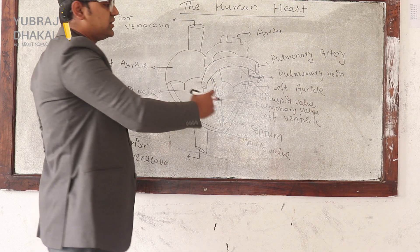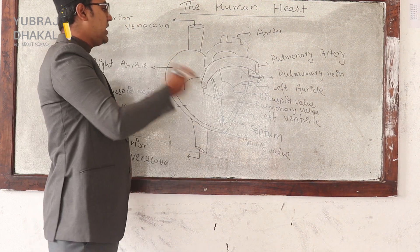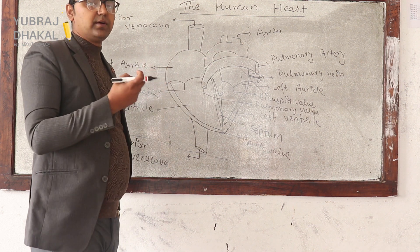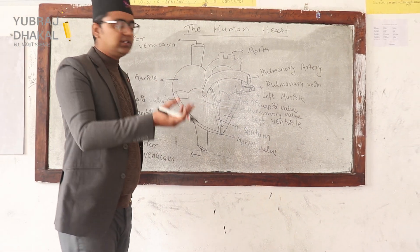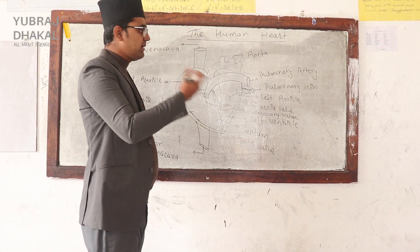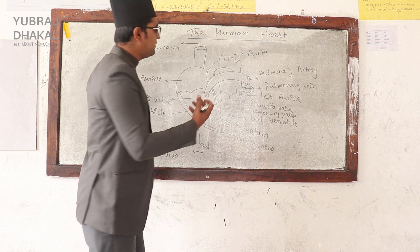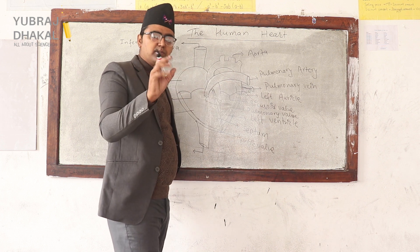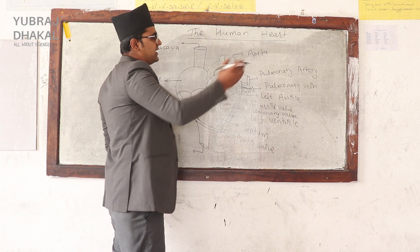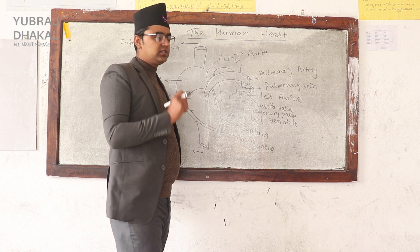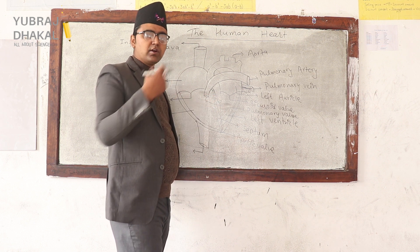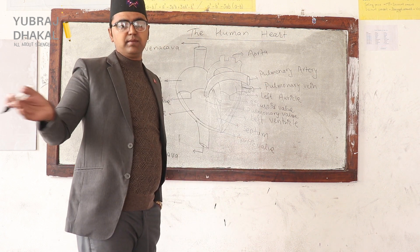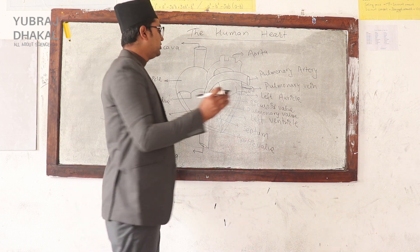In the lungs, the deoxygenated blood undergoes purification — the carbon dioxide is filtered out and oxygen is absorbed. The oxygen mixes with the blood, and the blood then becomes oxygenated blood.